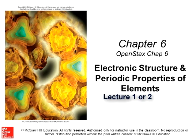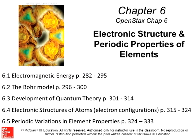This is Dr. Anthony Revis and this is SVSU General Chemistry 111 Chapter 6 Lecture 1 — Electronic Structures and Periodic Principles of Elements. In this chapter we will look at electromagnetic energy, the Bohr model and related theories, development of quantum theory, electronic structures of atoms and electronic configuration, and periodic variations in element properties based upon the periodic table. These topics will be covered, though not necessarily in this order.